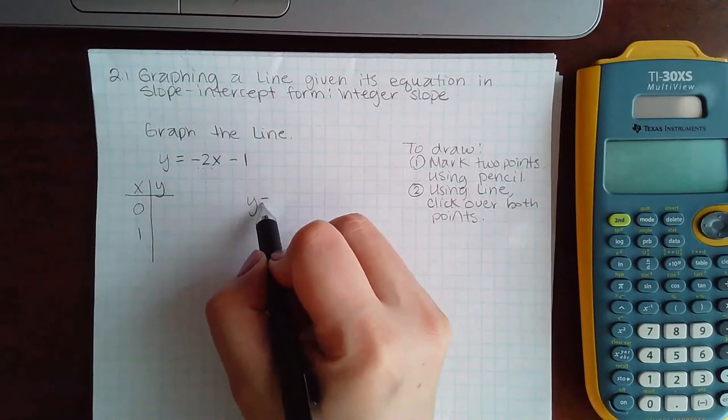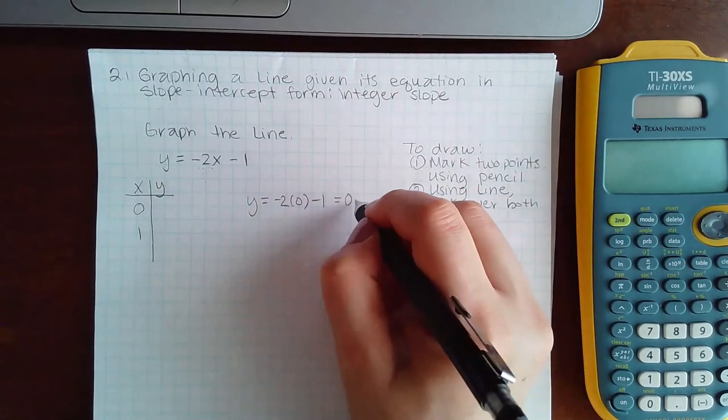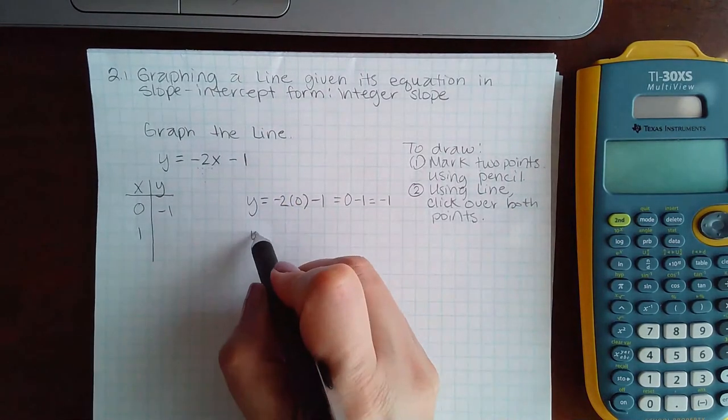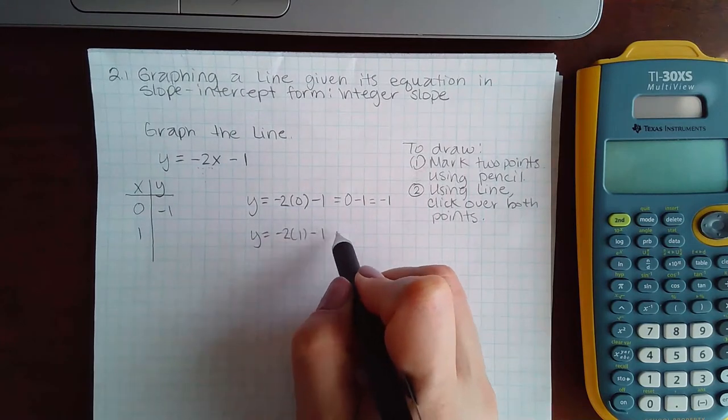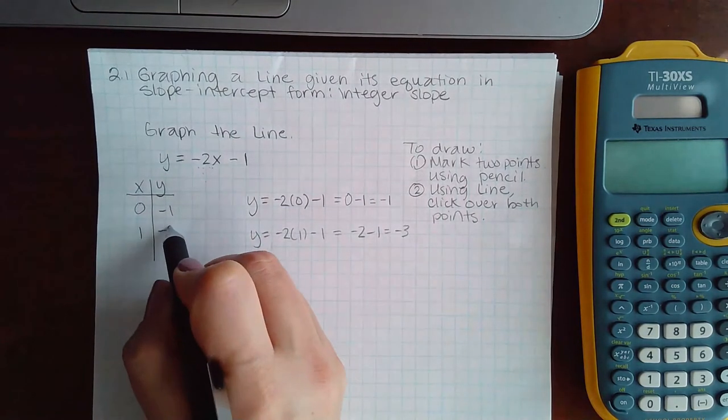So I have y equals negative 2 times 0 minus 1, which is 0 minus 1 or negative 1. Then I'm going to plug in 1 for x. I get negative 2 minus 1, which is negative 3.